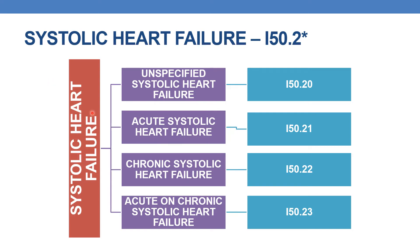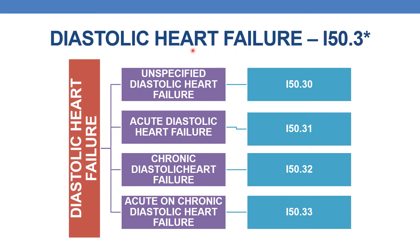To summarize the diastolic heart failure codes in the I50.3 series: I50.30 is unspecified diastolic heart failure, I50.31 is acute diastolic heart failure, I50.32 is chronic diastolic heart failure, and I50.33 is acute on chronic diastolic heart failure.